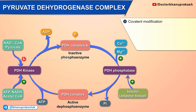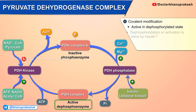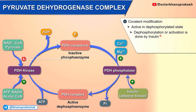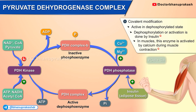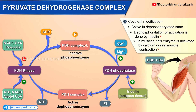Covalent modification: the enzyme is active in its dephosphorylated state. Dephosphorylation, or activation, is carried out by insulin. In muscles, this enzyme is activated by calcium during muscle contraction.